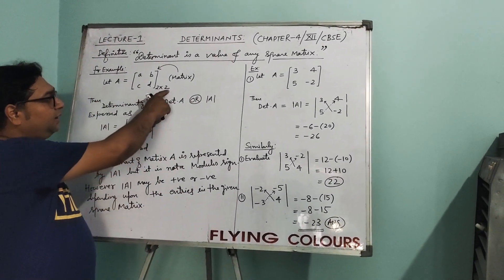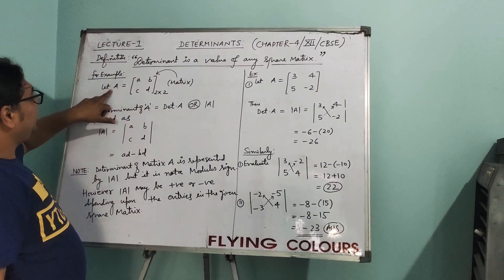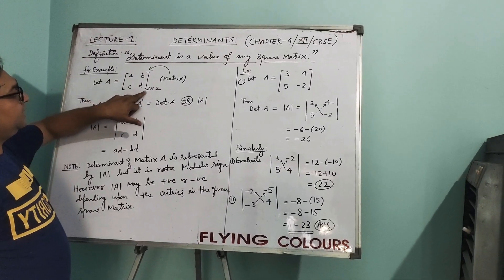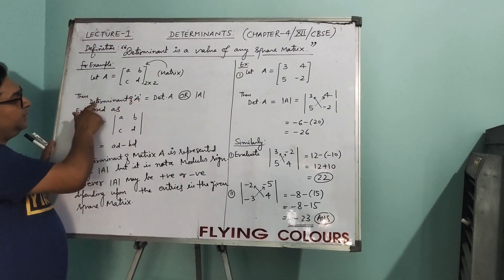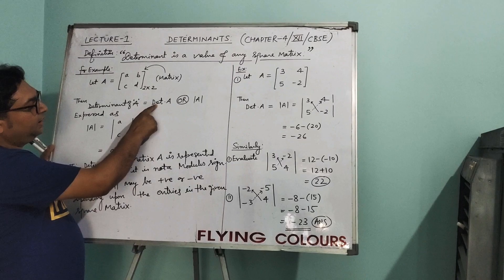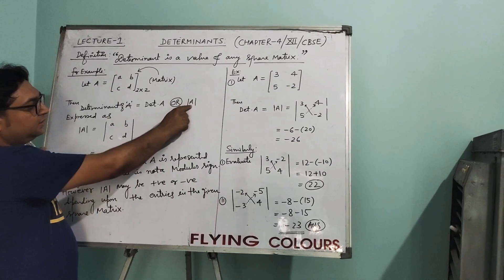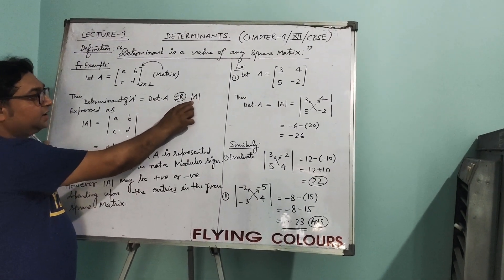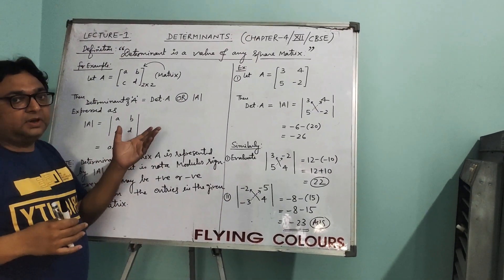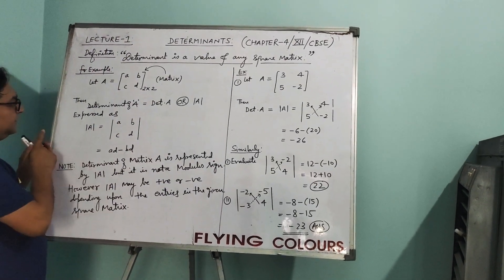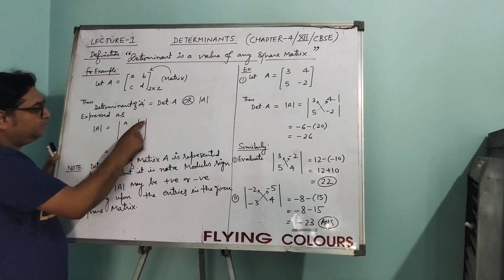It can be of 2 by 2, or 3 by 3, or 4 by 4 order. How will you find the determinant of any square matrix? Let A be the matrix with entries A, B, C, D — that is, of order 2 by 2. The determinant of matrix A is denoted by 'det A' or simply by the parallel brackets enclosing matrix A.